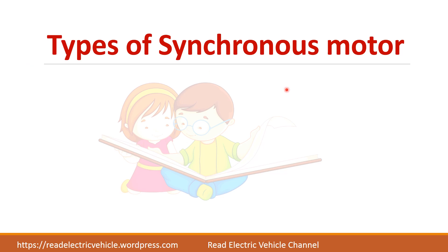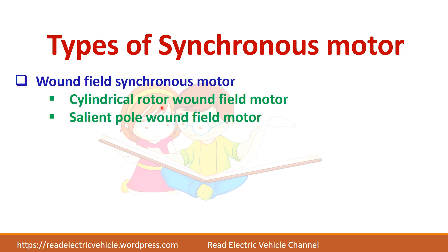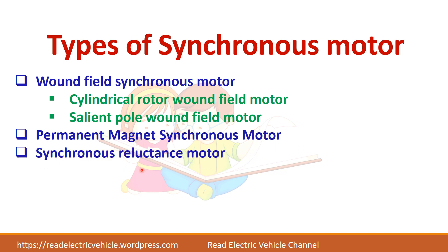There are different types of synchronous motor. The first one is called the wound field synchronous motor, which has two subtypes: cylindrical rotor and salient pole rotor — the rotor will be different in these two types. Next we have permanent magnet synchronous motor, synchronous reluctance motor, and hysteresis synchronous motor.